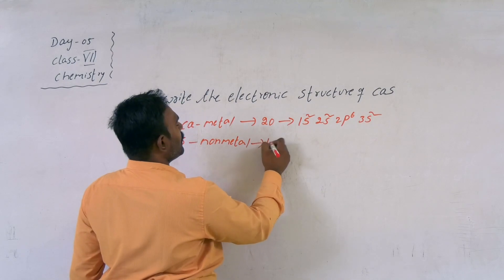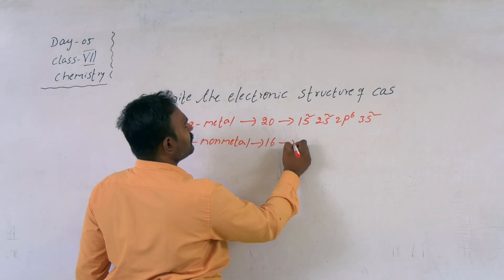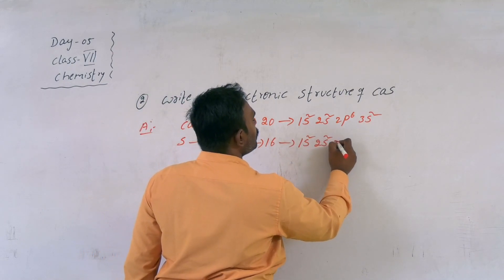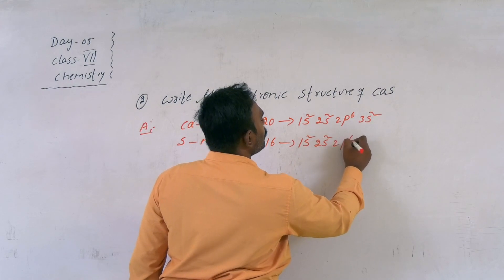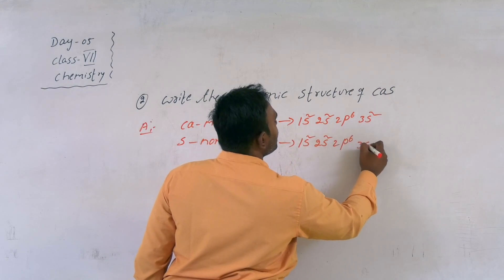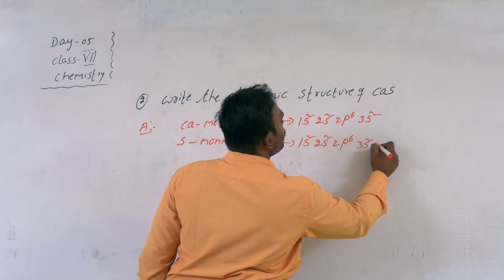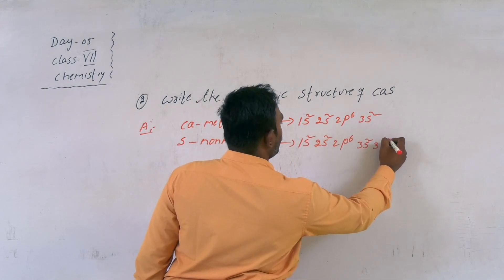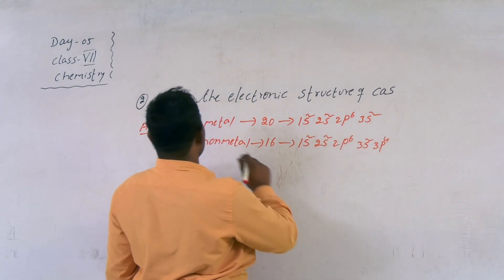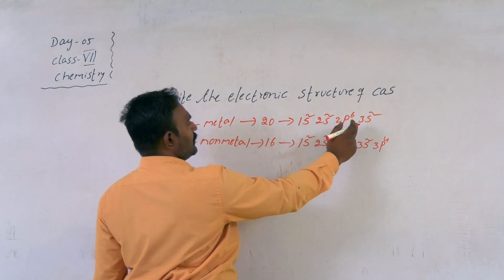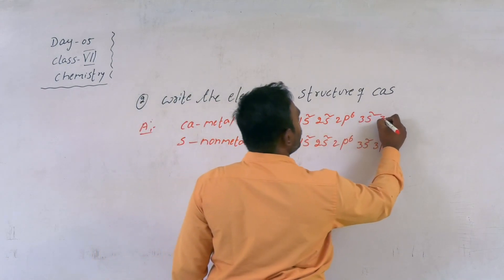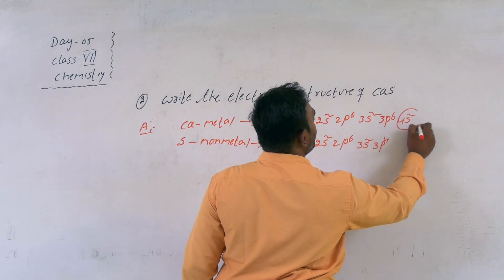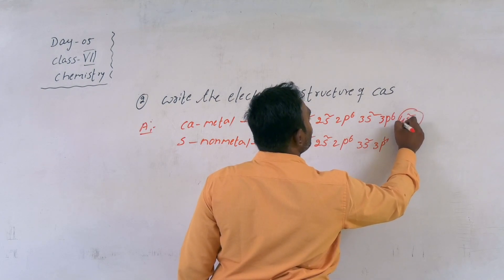Coming to the atomic number of sulfur: 16. Configuration: 1s2, 2s2, 2p6, 3s2, 3p4. Correction — calcium's full configuration is 1s2, 2s2, 2p6, 3s2, 3p6, 4s2.